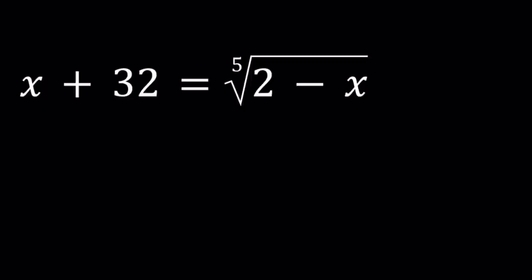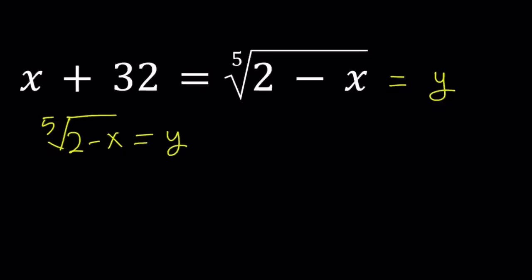So let's go ahead and set this equal to y. I'm going to use substitution which is a very powerful method. And by setting both of these equal to y we actually get two equations. So that's going to be like a system. Let's start with the radical. The fifth root of 2 minus x equals y. We're going to raise both sides to the fifth power, and that way we're going to get rid of the fifth root. And this is going to give us 2 minus x equals y to the fifth power.